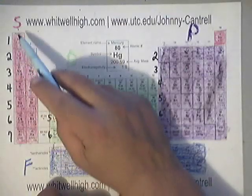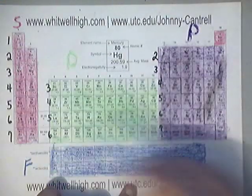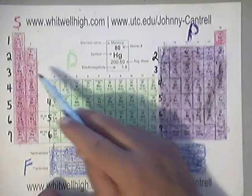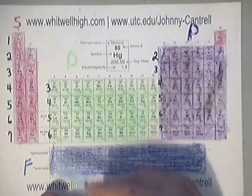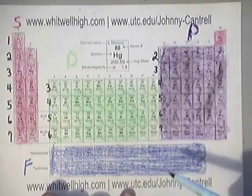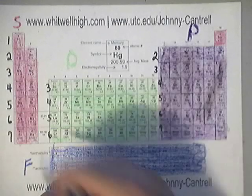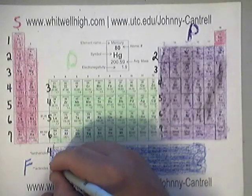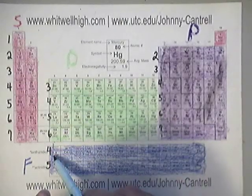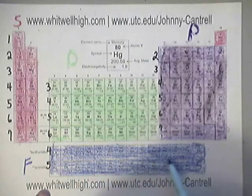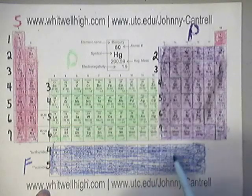Now pay attention. The S block started out with one, the P block started out with two, the D block started out with three. So the F block — the blue section — is going to start with a four as the principal quantum number, the energy level. So this is four and this is five. This is 4F1, 4F2, 4F3, 4F4, 4F5, 4F6, 4F7, 4F8, 4F9, 4F10, 4F11, 4F12, 4F13, and 4F14.